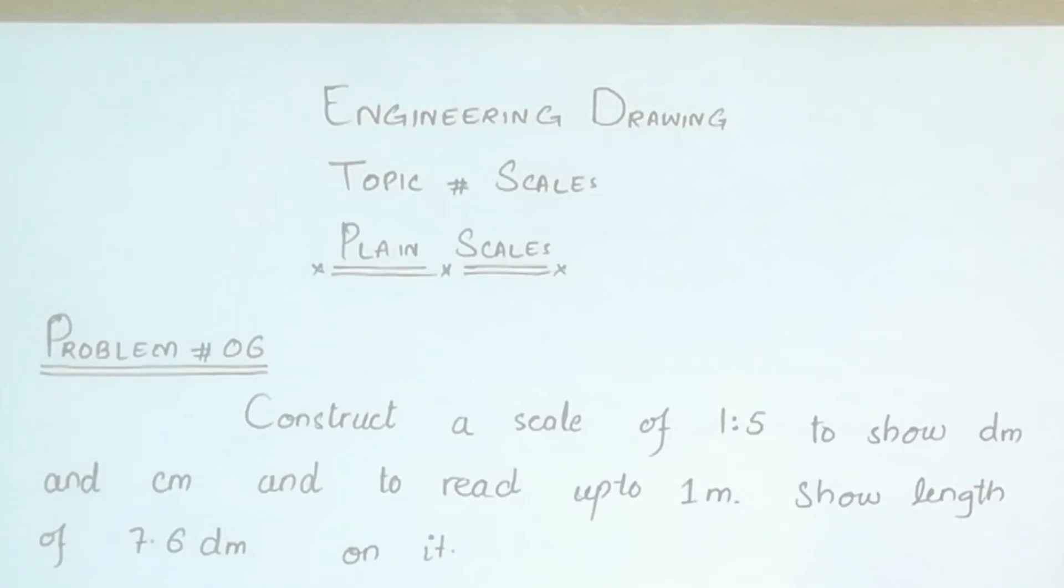Hello dear friends and students, welcome again to the subject engineering drawing, continuing the same problems from the plane scales. You can see here the statement of a problem which is construct a scale of 1 ratio 5 to show decimeter and centimeter and to read up to 1 meter, show length of 7.6 decimeter on it.